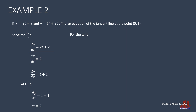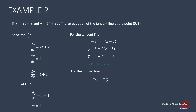Now that the slope is known, the point-slope formula gives the tangent line as: y − 3 = 2(x − 5), simplified to y − 3 = 2x − 10, rearranged as 2x − y − 7 = 0. For the normal line, the new slope is the negative reciprocal of 2, which is −1/2. Substituting into the formula: y − 3 = −(1/2)(x − 5), simplified to 2y − 6 = −x + 5, giving x + 2y − 11 = 0.